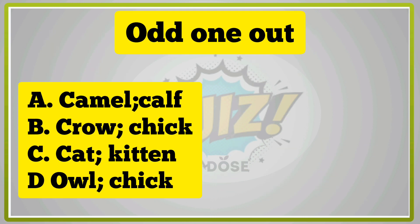Odd one out. A, Camel Calf. B, Crow Chick. C, Cat Kitten. D, Owl. Chick. Yes, D is right answer.